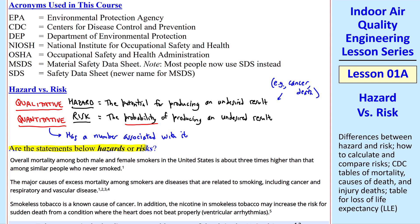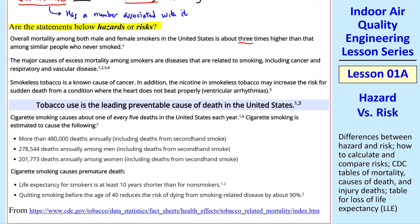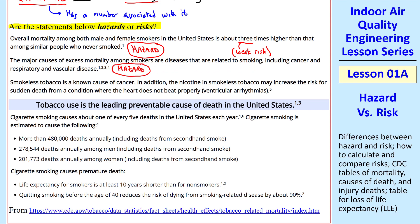Let's think about these statements. Are they hazards or risks? These are related to smoking, from the CDC website. Overall mortality among both male and female smokers in the U.S. is about three times higher than that among similar people who never smoked. Well, here there is a number, but it doesn't really tell us any kind of probability, so I would call this one a hazard — though you might say it's a weak risk. The major causes of excess mortality among smokers then lists some diseases — there's nothing quantitative about that one, so it's a hazard.